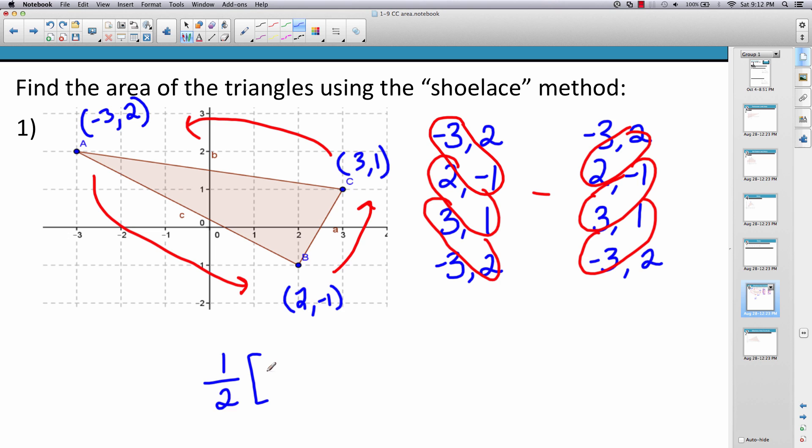So -3 times -1 is 3, 2 times 1 is 2, 3 times 2 is 6, so 3 plus 2 plus 6. Minus: 2 times 2 is 4, 3 times -1 is -3, and -3 times 1 is -3.